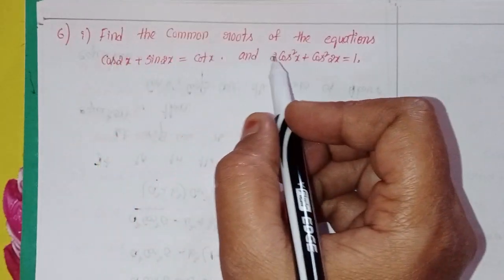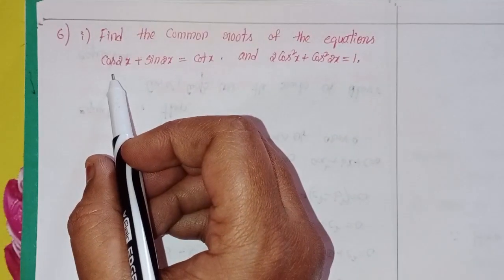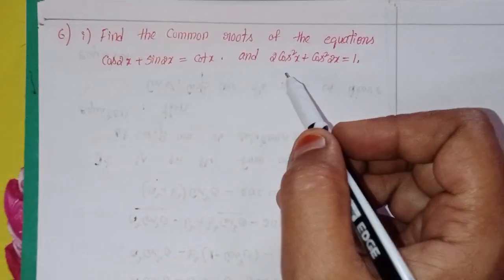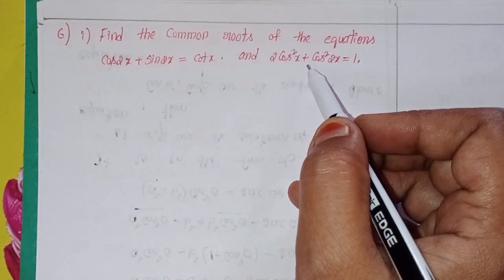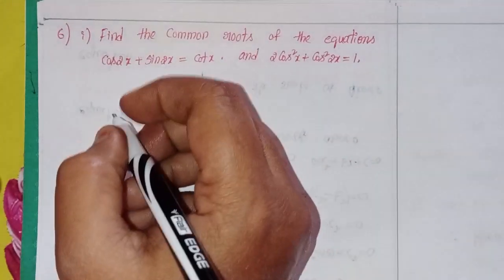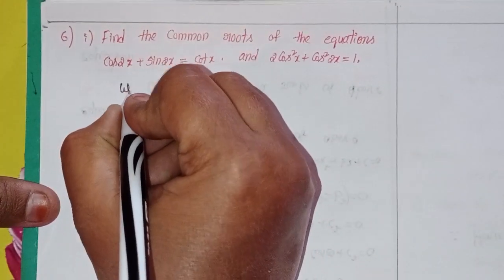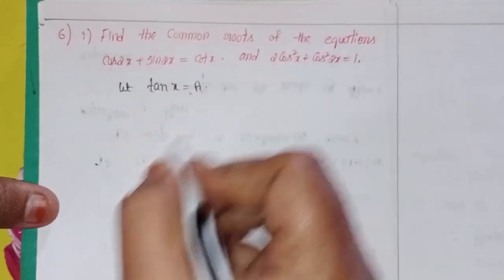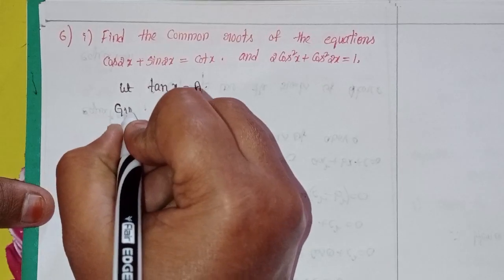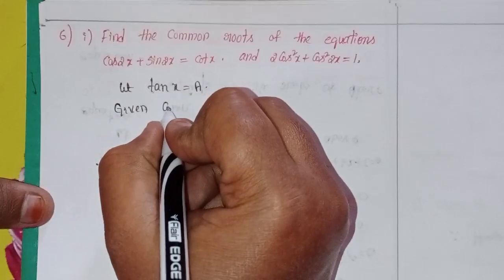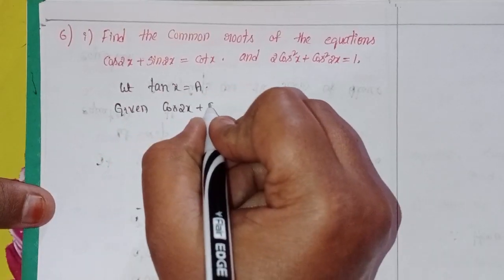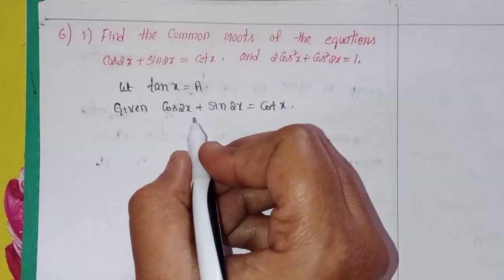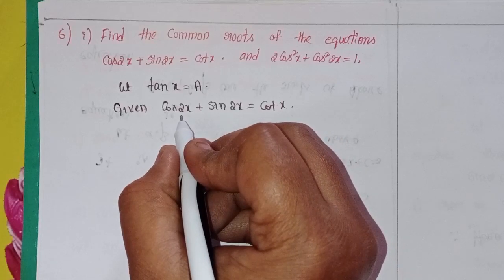First one: find the common roots of the equations cos 2x plus sin 2x equal to cot x, and 2 times cos squared x plus cos squared 2x equal to 1. I will let tan x equal to a. Given: cos 2x plus sin 2x equal to cot x. Can I write this in terms of tan?